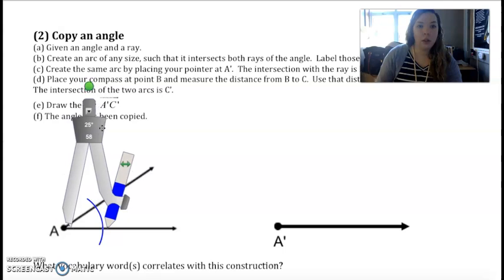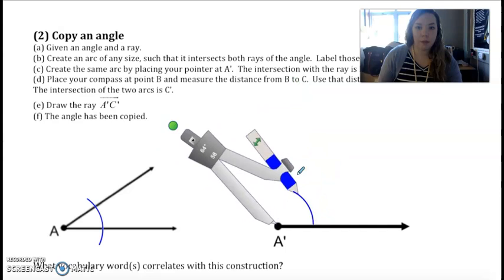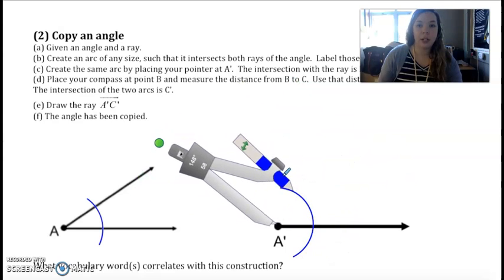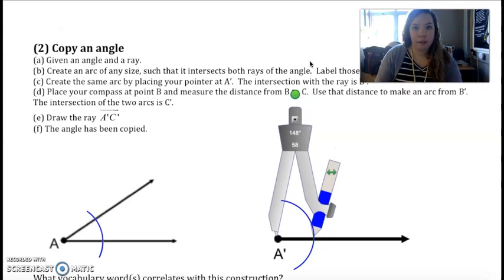Create the same arc on our A prime. I'm going to scoot this over, don't make it any wider when you move it. I'm going to make it a little bigger just to be sure that it's big enough for my other segment here. Label those points. Create an arc of any size that intersects both rays at the angle, label those B and C. Create the same arc. The intersection with the ray is B prime. This would be point B and we just made B prime.